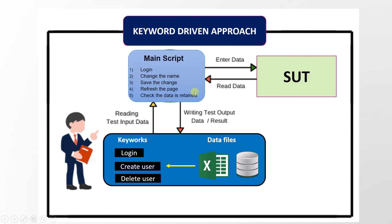When we execute the test cases, the keyword used in the test case is replaced with the action words implemented for that keyword, and it also takes data from the data file. This main script then interacts with the software under test to give the input and extract the output. We then compare the obtained data with the expected data stored in the database. This is how a keyword driven approach works.